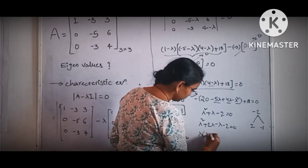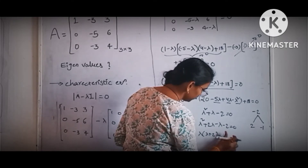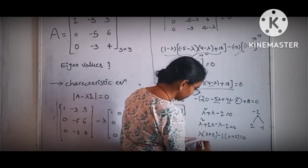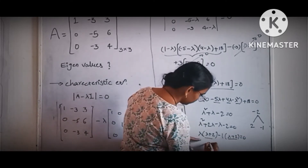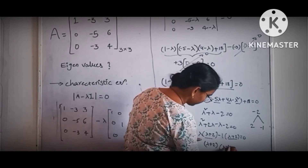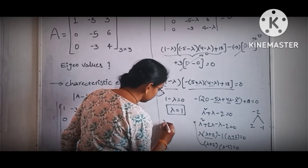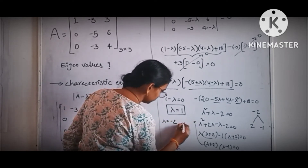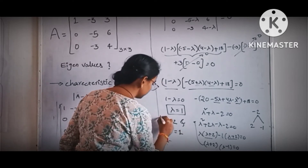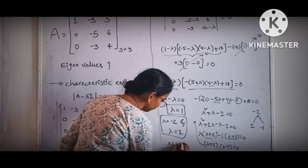The roots of minus 2 are 2 times minus 1, so we write lambda squared plus 2 lambda minus lambda minus 2 equal to 0. Taking lambda outside: lambda times lambda plus 2, and then taking 1 common: 1 times lambda plus 2 equal to 0. Since lambda plus 2 is common, the remaining term is lambda minus 1 equal to 0. So lambda equals minus 2 and lambda equals 1. Therefore the eigenvalues for the given matrix are 1, 1, and minus 2.